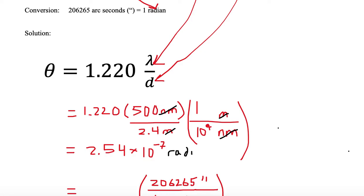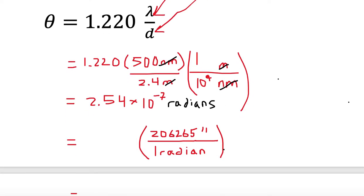Now we have to carry this down because we want to convert out of radians and put it in terms of arc seconds. We're going to carry down our 2.54 times 10 to the minus 7th. Our unit is radians and we're going to multiply that by the conversion: 206265 arc seconds divided by 1 radian.